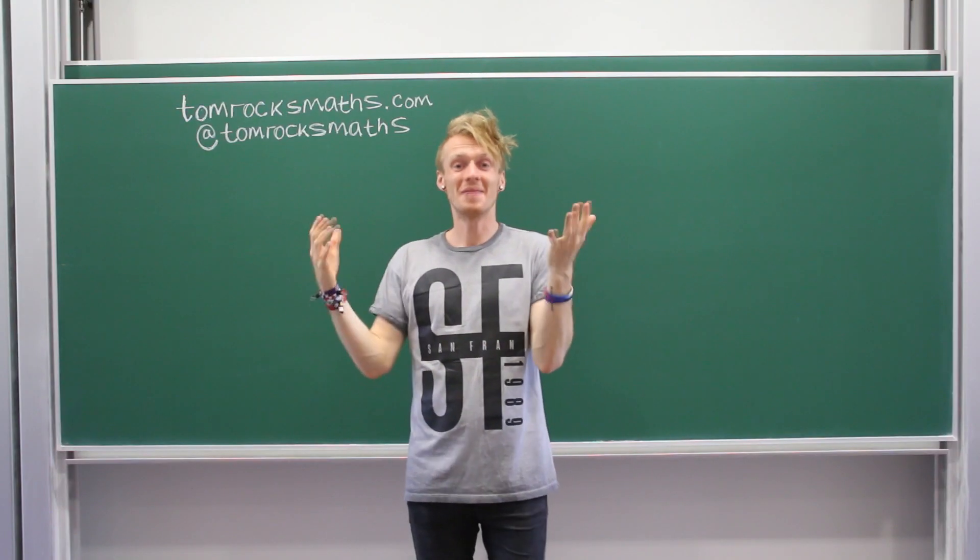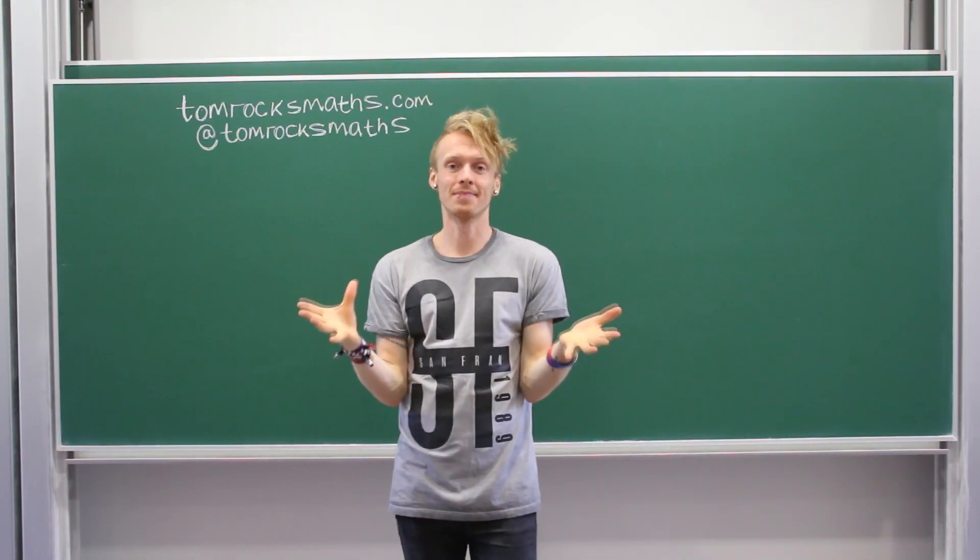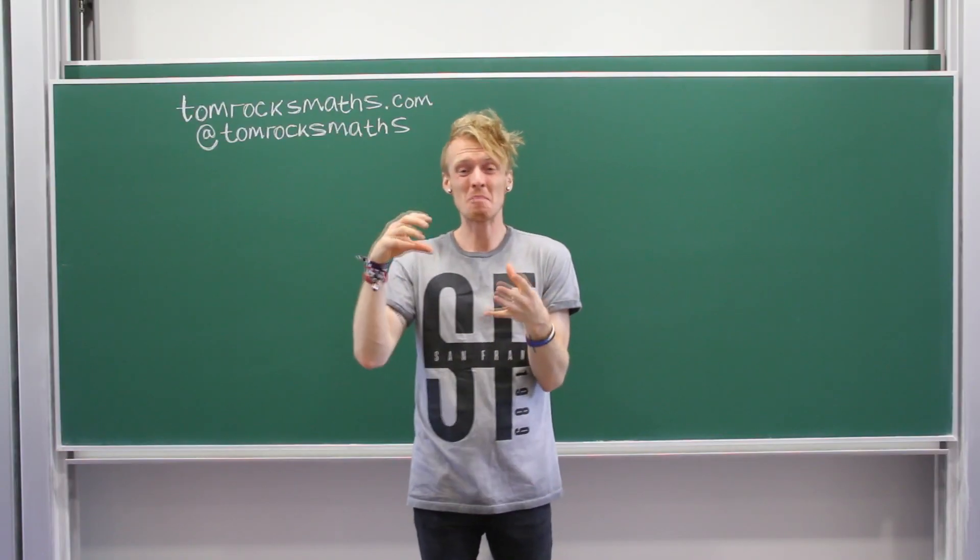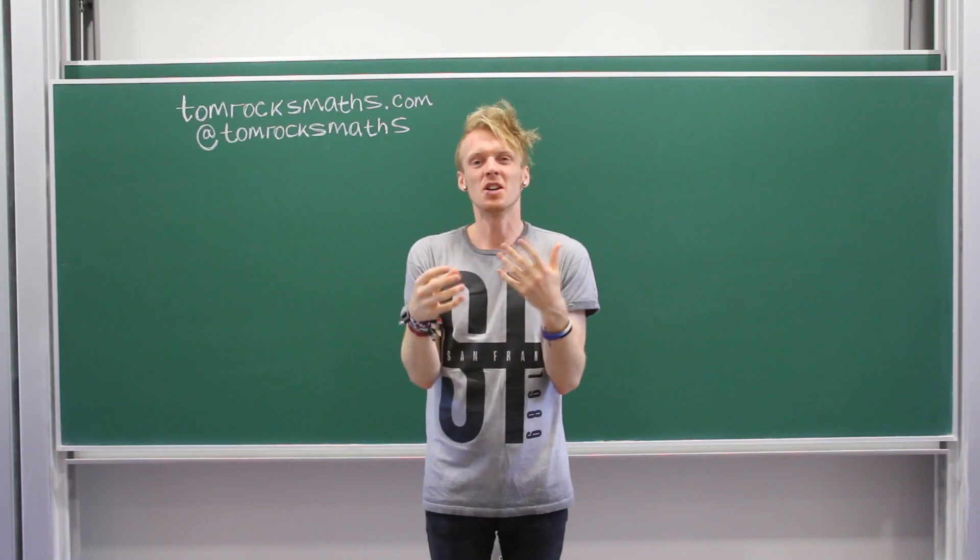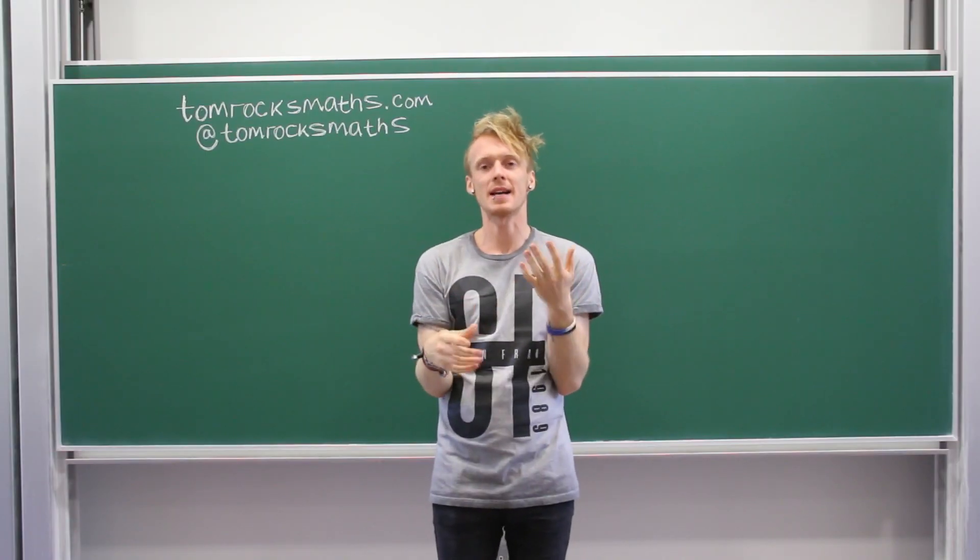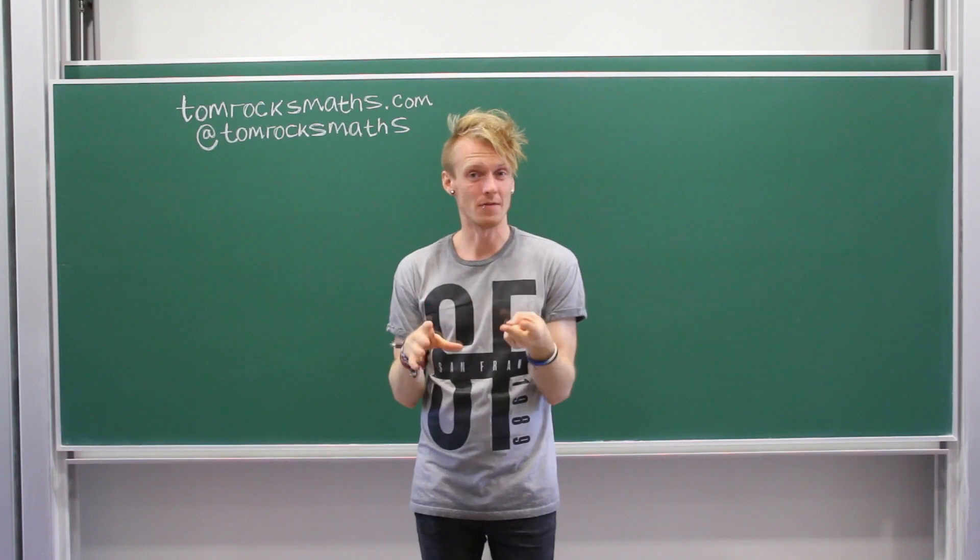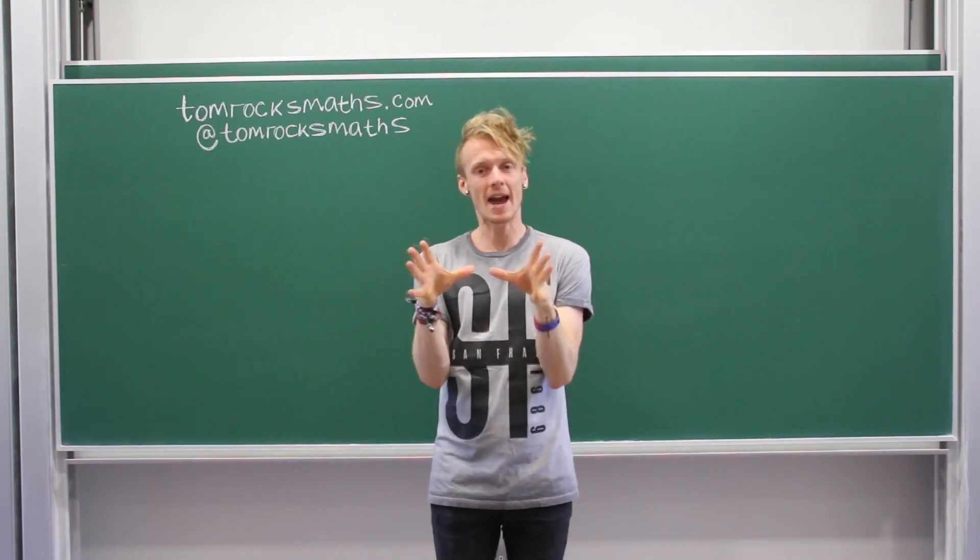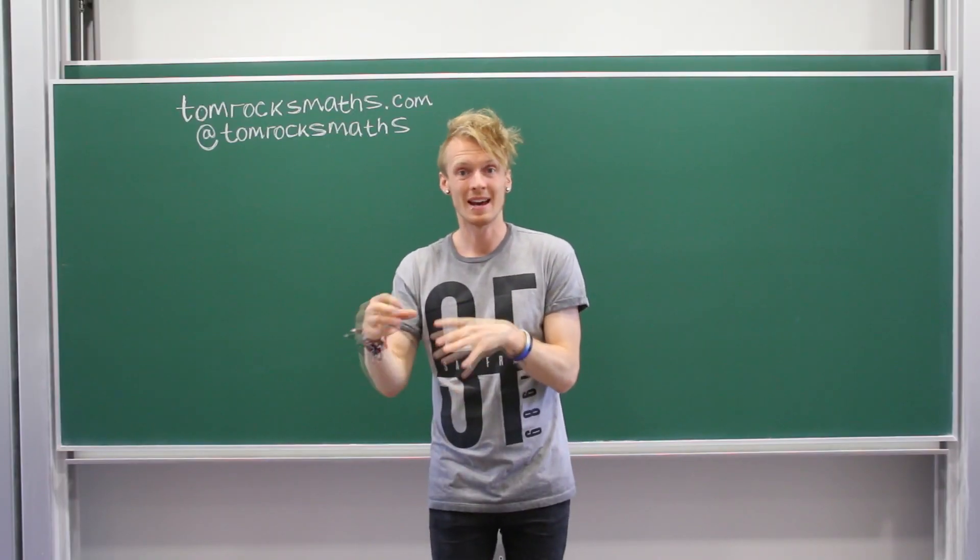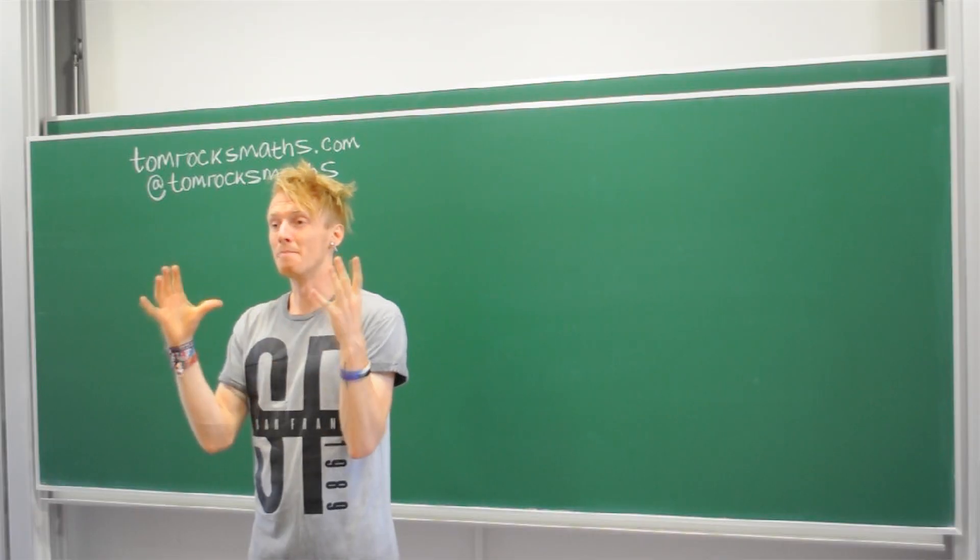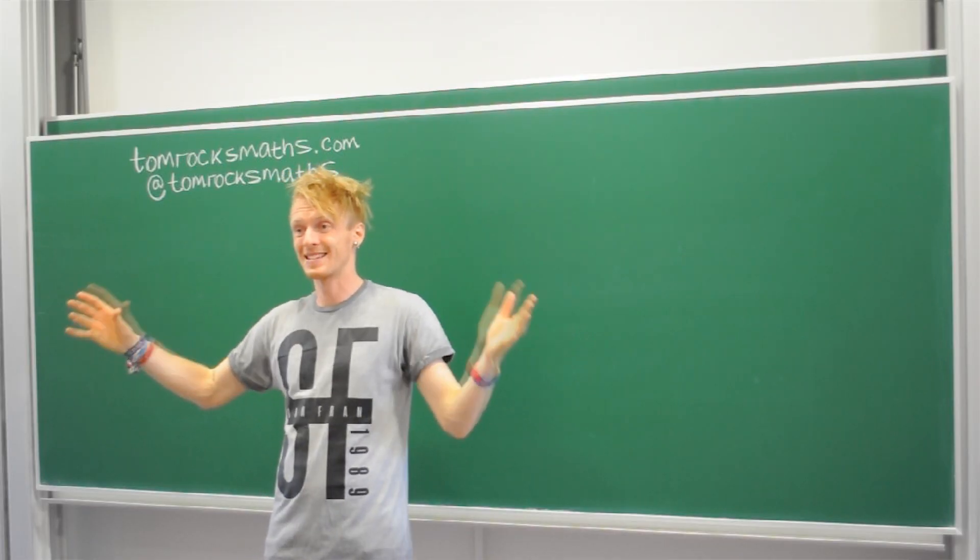So what are these axioms? Well, for the real numbers, there are 10. 10 very basic axioms upon which pretty much all of maths is built. And the reason I say pretty much is you need a few more properties about ordering of numbers and about completeness of the numbers, which I'm not going to go into. But these 10 axioms plus ordering plus completeness, that's it. They are the most basic mathematical axioms upon which all of maths is built.